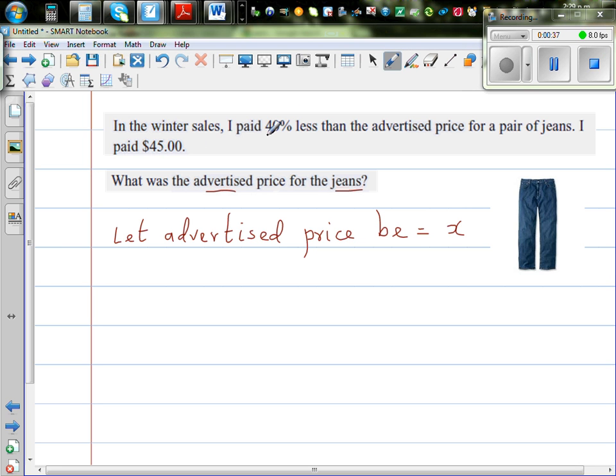You are having a discount of 40% and then you are paying $45. That's what you have paid. So we can say advertised price minus 40% of the advertised price is equal to what you pay.